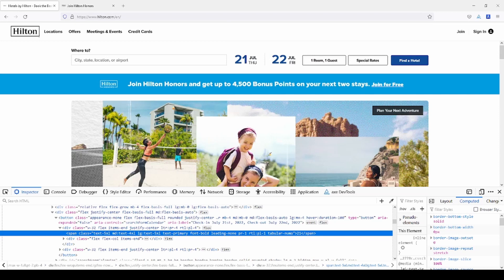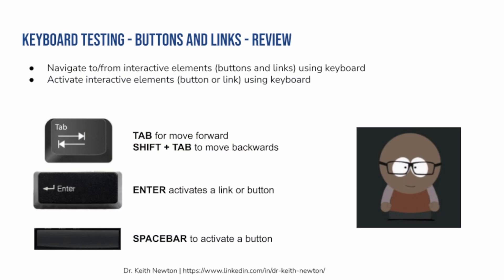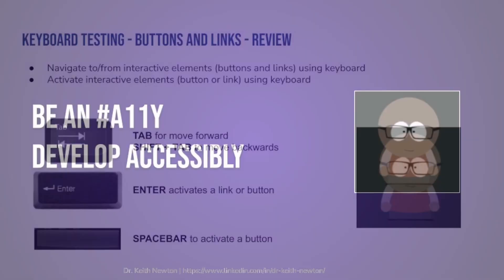Let's review. Buttons and links have a particular methodology. You can navigate to and from them using tab to move forward and shift plus tab to move backwards. You can use the enter key to activate either a link or a button, and you can use the space bar to activate a button. Remember, a link may only be activated using the enter key. So now that you know it, you can go forth, do your testing on buttons and links, and most importantly, continue to be an ally and develop accessibly. Thanks.